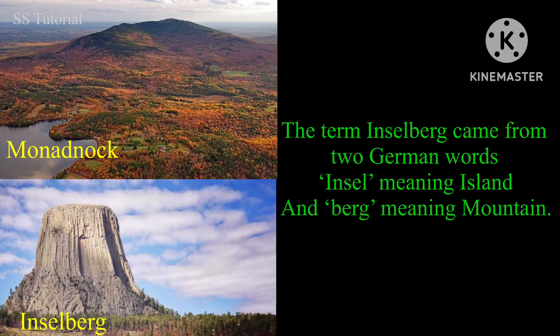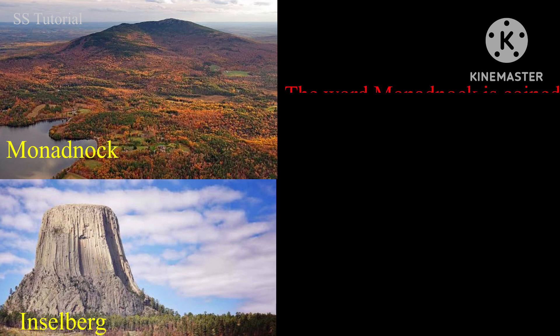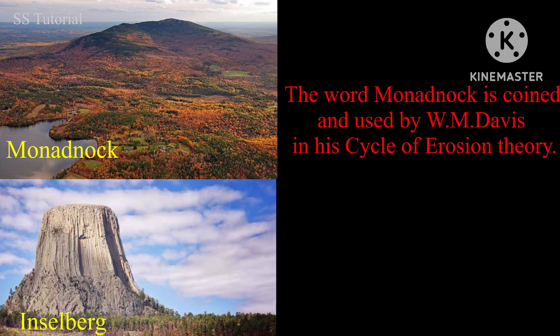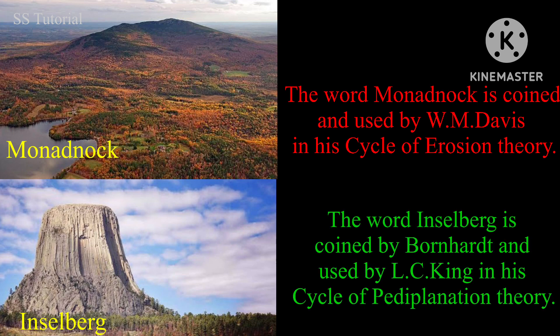On the other hand, the term Inselberg came from two German words: 'Insel', which means island, and 'Berg', which means mountain. The word Monadnock was coined by American geologist William Morris Davis and used in his cycle of erosion theory. The word Inselberg was coined by Bornhardt and used by L.C. King in his cycle of pediplanation theory.